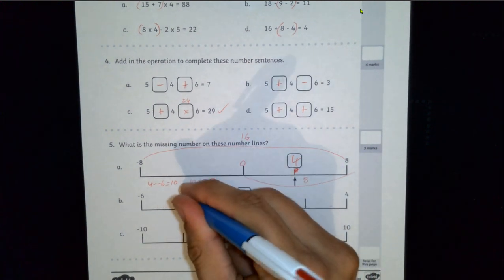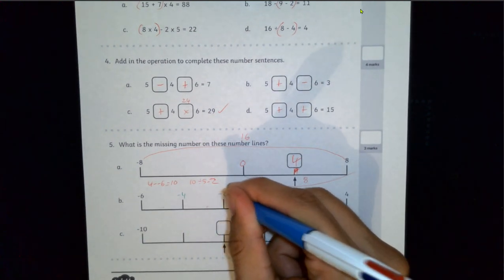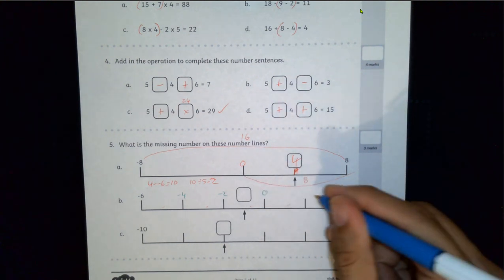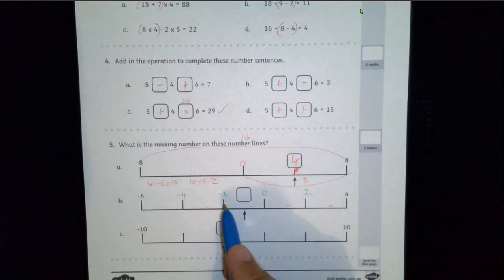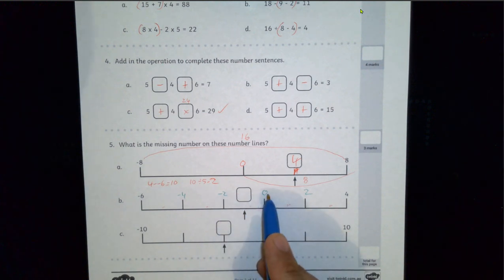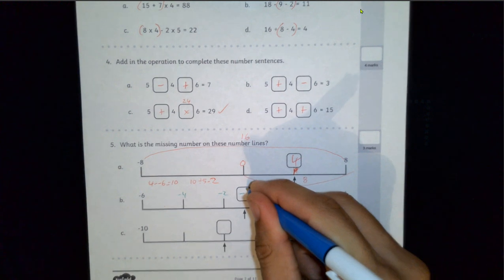So this should be minus 4, minus 2, 0, 2, 4. So if this is minus 2, and this is 0, the in-between, of course, will be minus 1.